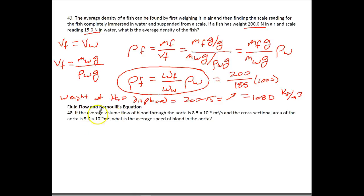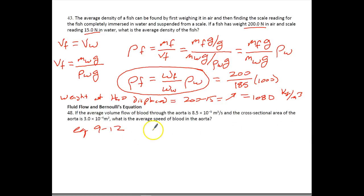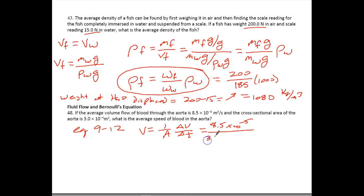For number 48, this involves fluid flow and Bernoulli's equation. If the average volume flow of blood through the aorta is about 8.5 times 10 to the negative 5th meter cubed per second and the cross-sectional area is 3 times 10 to the negative 4th square meters, what is the average speed of the blood in the aorta? Using equation 9-12, velocity equals 1 over area times the change in volume over the change in time. The change in volume is 8.5 times 10 to the negative 5th, divided by the area of 3 times 10 to the negative 4th square meters, over 1 second. This equals 0.28 meters per second.